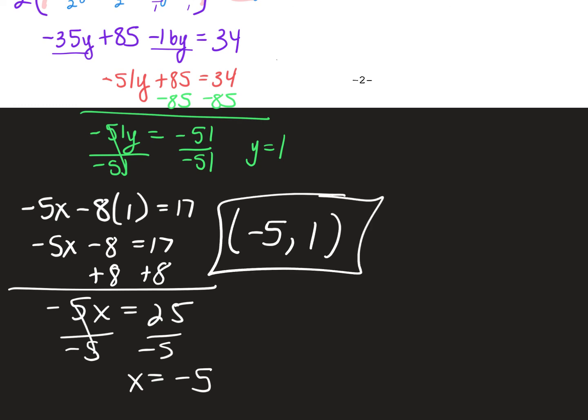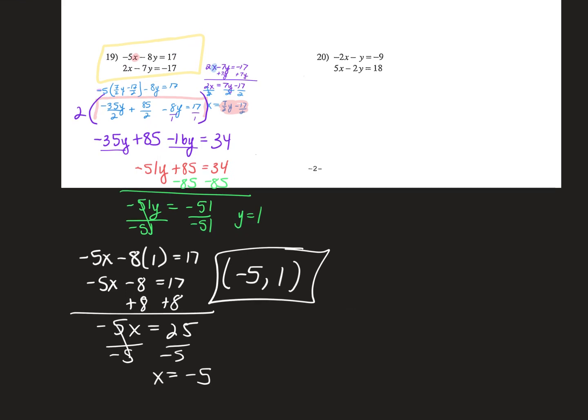Just because you have a fraction doesn't mean it's going to be a ridiculously hard problem. You will have fractions on your test — I promise you. You have two ways to fix it: multiply through to get rid of the denominator, or change to a decimal. But you can only use a decimal if it's terminating — you cannot solve an equation with a rounded decimal. Now let's just check to make sure this works.